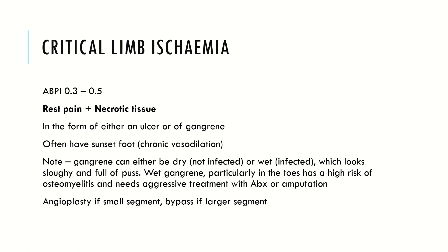Critical limb ischemia will need hospital treatment. Following a CT angiogram, if it's small segment disease, you tend to do an angioplasty — inserting a small balloon into the artery, inflating it to clear the clot. If it's a much larger segment of disease, for example the entire femoral-popliteal vessel, then you might need to do a bypass.